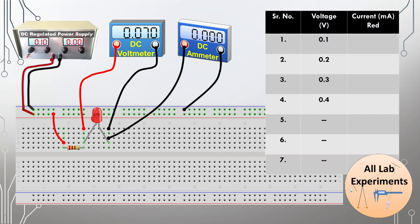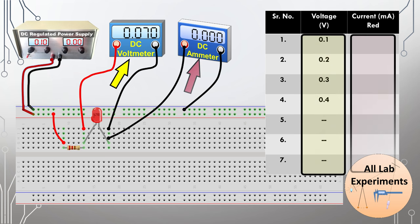Now we switch on the power supply. We can measure the voltage across our LED and the current passing through it in milliamperes. We can make a table of this data. We will increase the voltage in our regulated power supply and observe the voltage across the LED and current passing through it.